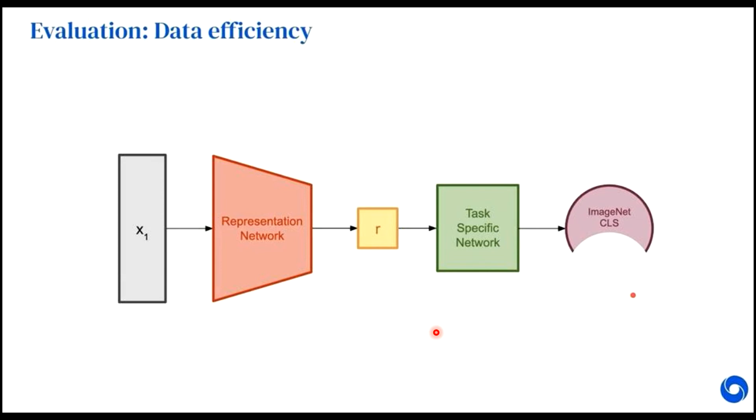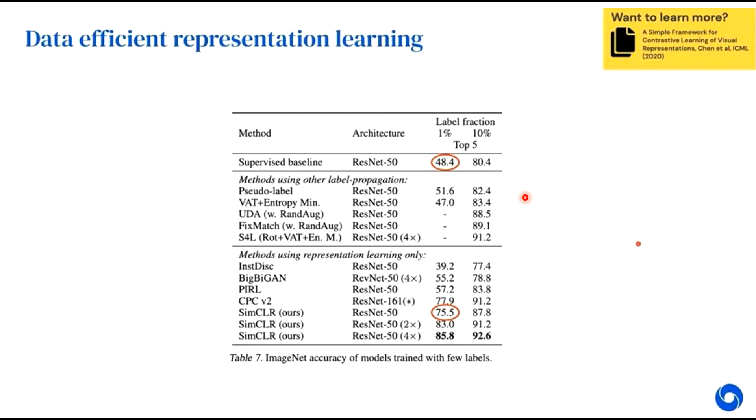The next way of evaluating your self-supervised learning model is the data efficiency. So you have your representation network and you just learn the representation. And now instead of classifying or performing your downstream task on the entire dataset, you perform it on a portion of your dataset. So in literature, mainly they use 1% or 10% of the labeled ImageNet dataset. And then they try to train the model and report the accuracies, the top-five or the top-one accuracies.